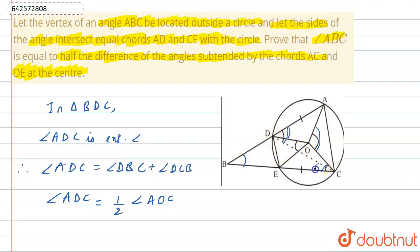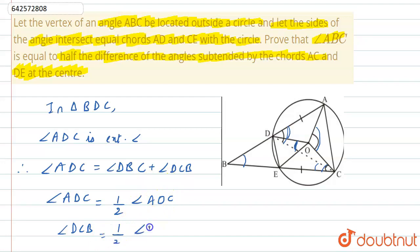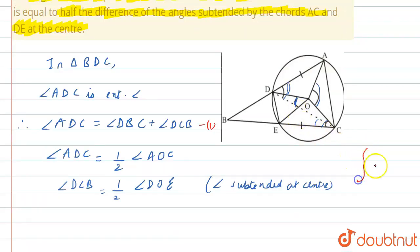Similarly, angle DCB equals half of angle DOE, by the same inscribed angle theorem — the angle subtended at the centre. This is equation 2.